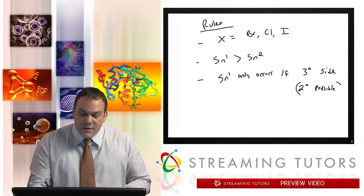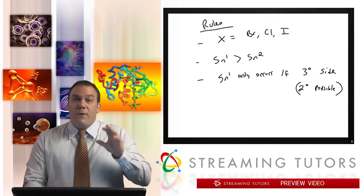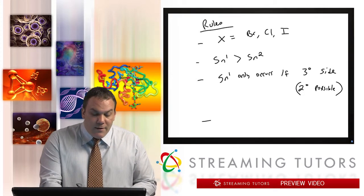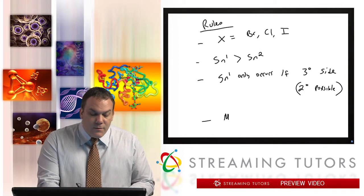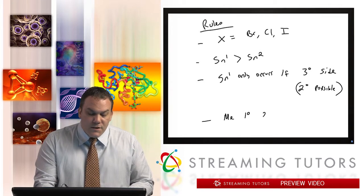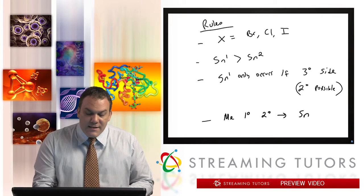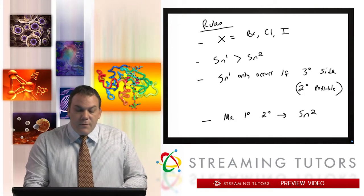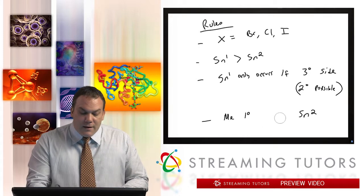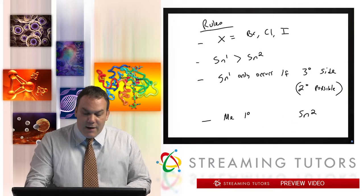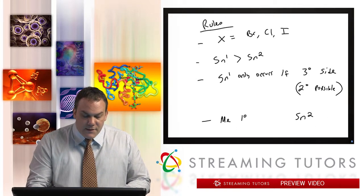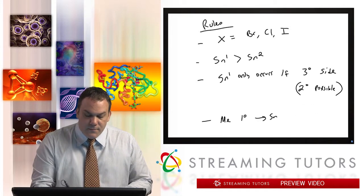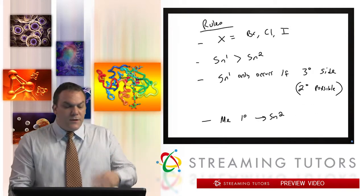Secondary is on the fence — it's possible for secondary but always for tertiary. The next rule is that if it's methyl or primary, it favors SN2. I'll leave out secondary for now to avoid confusion, so the simplified rule is: methyl or primary goes SN2.